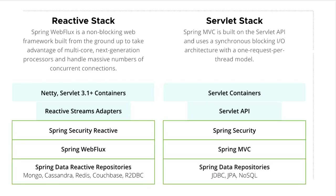In our traditional API we use Spring Web MVC, which uses the servlet stack. Spring Web MVC is built on the servlet API and uses a synchronous blocking input/output architecture with the one-request-per-thread model, which slows down application performance. In contrast, Spring WebFlux is a reactive stack — an asynchronous and non-blocking web framework built from the ground up to take advantage of multi-core, next-generation processors and handle massive numbers of concurrent connections.